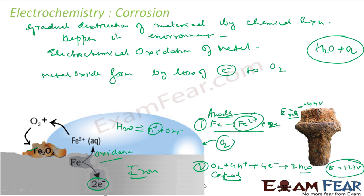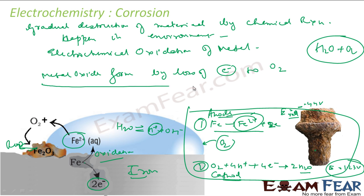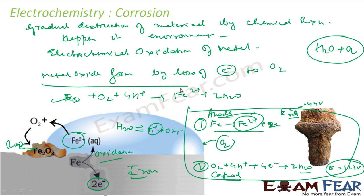The ferrous ions are further oxidized to become ferric ions, and that is called rust. So if you join the two reactions, what you get is: iron reacts with O2 and 4H+, electrons cancel on both sides, giving Fe2+ and water. This Fe2+ will be further oxidized to become ferric, and that is rust.